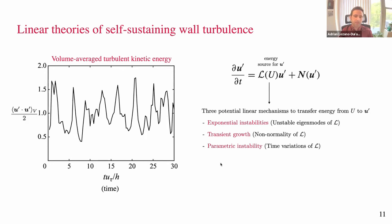The first type is exponential instability, related to unstable eigenmodes — analogous to classical instability but for turbulent flow. The second is transient growth, related to the non-normality of the operator. The third is parametric instability — a combination of the previous two where what matters is that operator L is changing in time. These are the three types of mechanisms I will explore, each with a distinct physical interpretation.